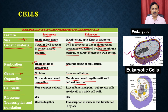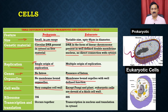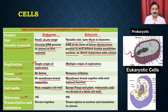Regarding the cell wall, there is a definite, very complex cell wall present in the prokaryotic system, whereas in the case of eukaryotes, except for fungi and plants, eukaryotic cells are devoid of a thick cell wall — meaning animal cells are devoid of a cell wall, whereas fungi and plants do have one. Regarding ribosomes, which are the protein machinery, they are 70S in prokaryotes whereas in eukaryotes they are 80S.